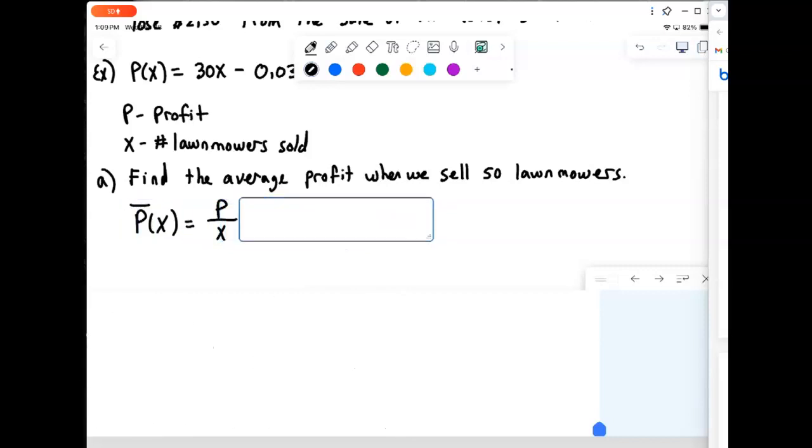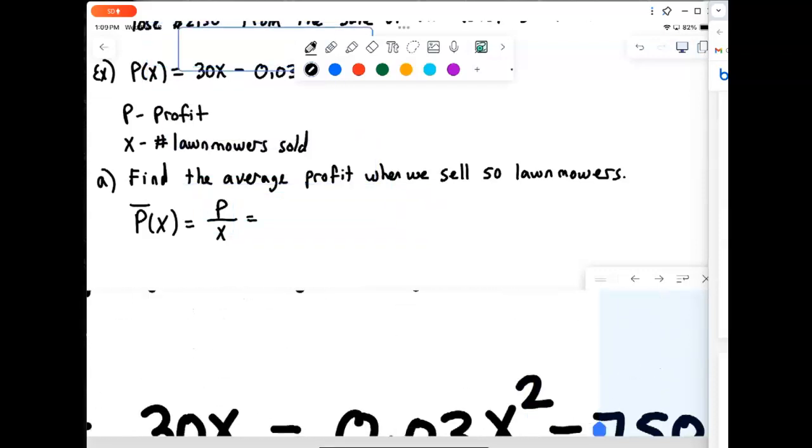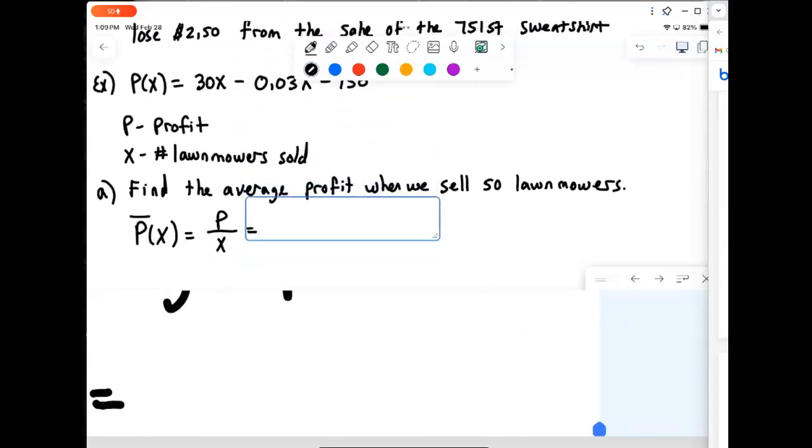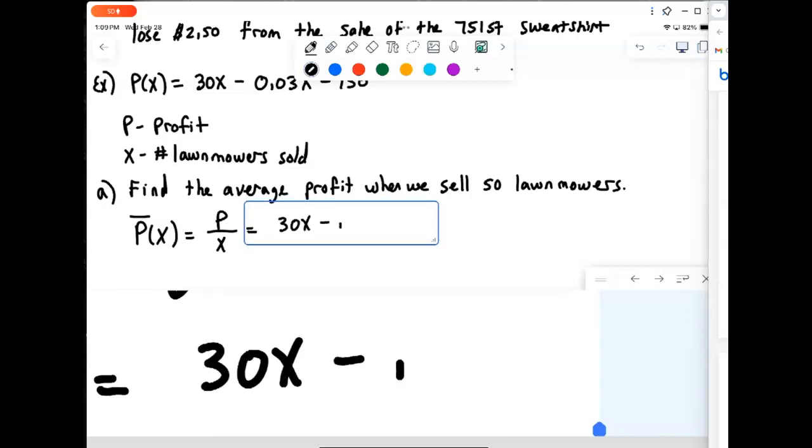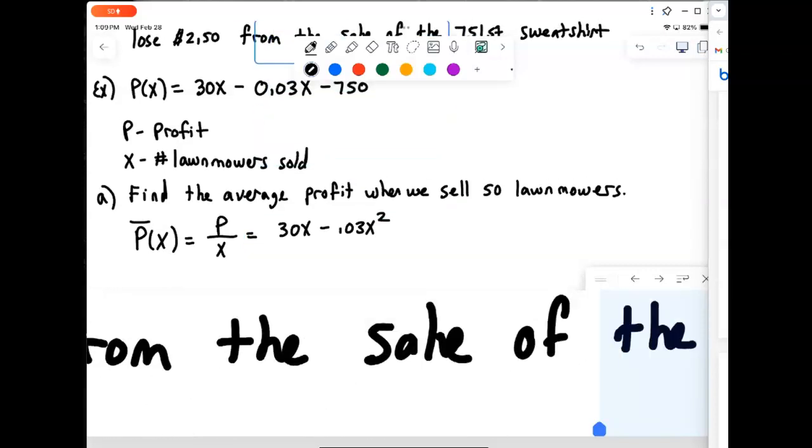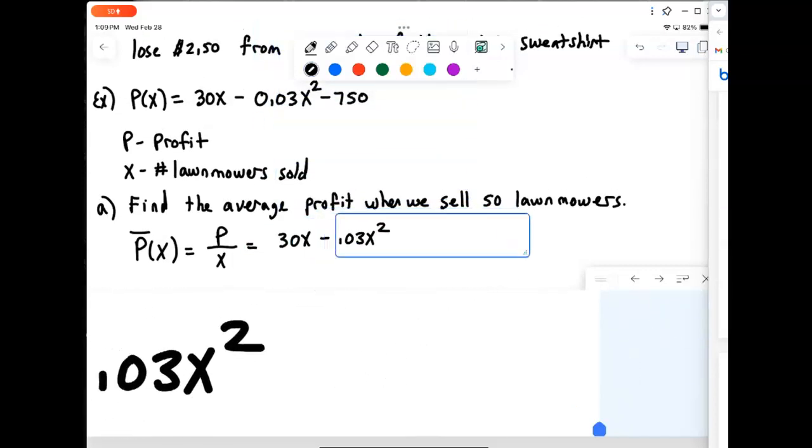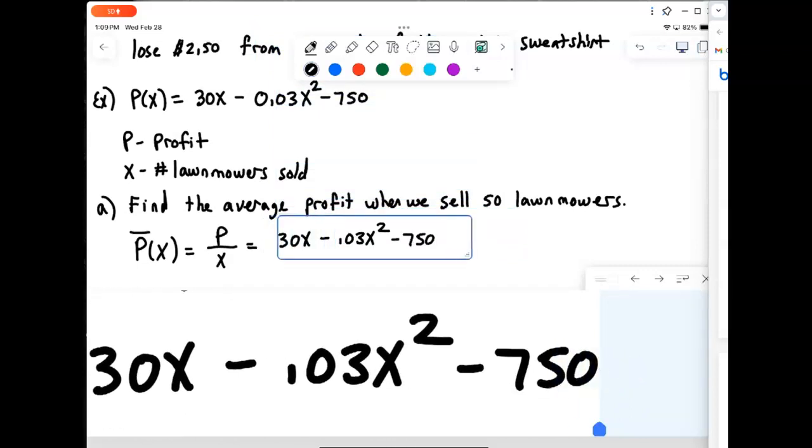So to find our average profit function for 50 mowers, we're going to take and divide that answer by x. So we take our profit function 30x minus 0.03x squared minus 750, and we're going to divide that by x.